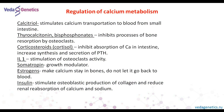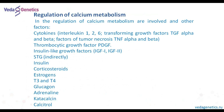Another important element is cortisol, which is used as a medicament, and there are two types of it. IL-1 interleukin stimulates osteoclast activity and STG is a modulator of growth. Estrogen makes calcium stay in the bones, not letting it go back into the blood. Insulin stimulates the production of collagen. Other participants in the process of calcium regulation are cytokines, glucagon, adrenaline and others.